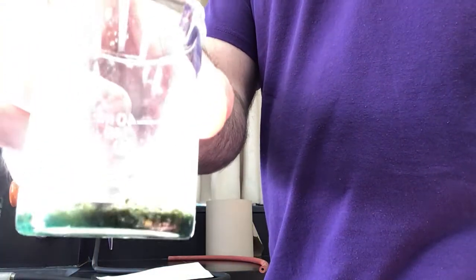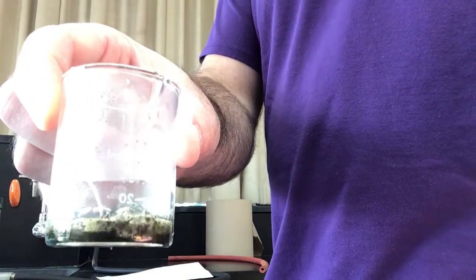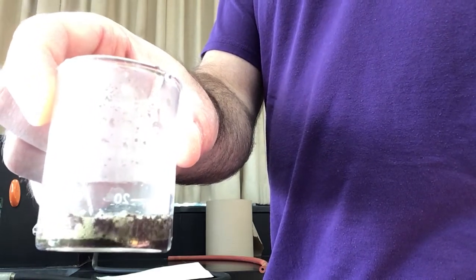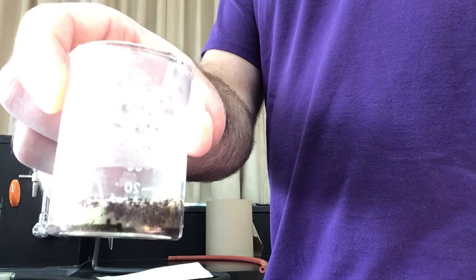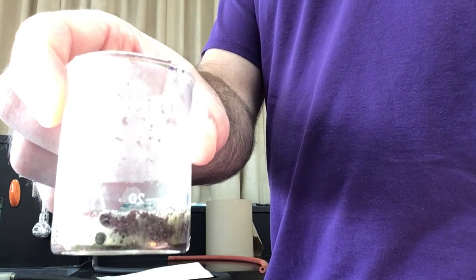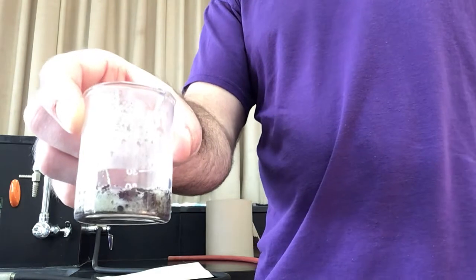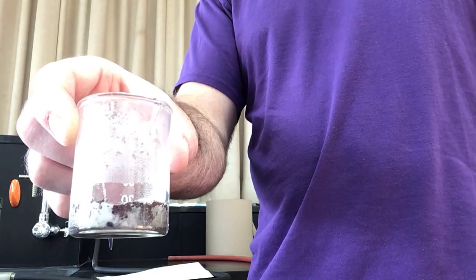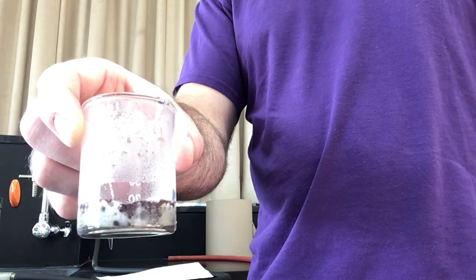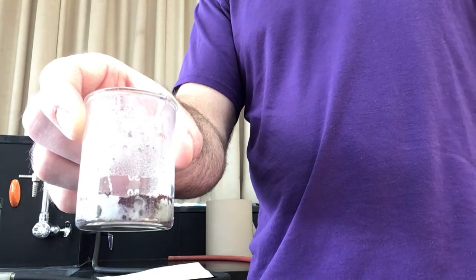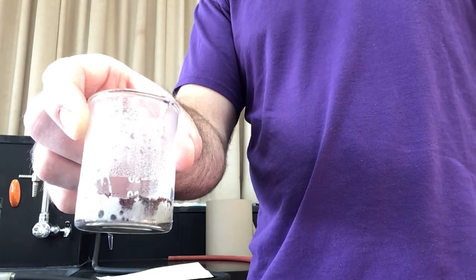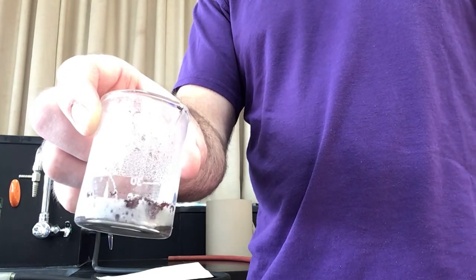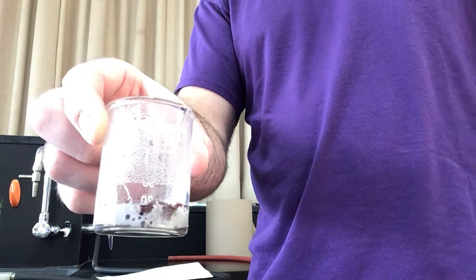You can see it's reacting super vigorously. When the reaction stops, a couple ways that we're going to know: one, we're not going to see this vigorous reaction that we see happening here. Also, the solution that was green should be colorless then. We'll let this continue to react and then we're going to filter off the copper that is forming as a solid.